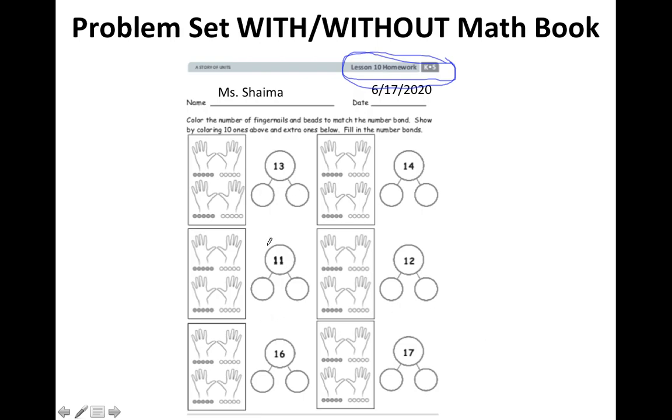What you will need today is it says color the number of fingernails and the beads to match the number bond and show by coloring 10 ones above and some extra ones below to fill out the number bond. The number bond says 13, and the two parts of 13 in this case are 10 and 3, right? Because we're only working with 10 ones.